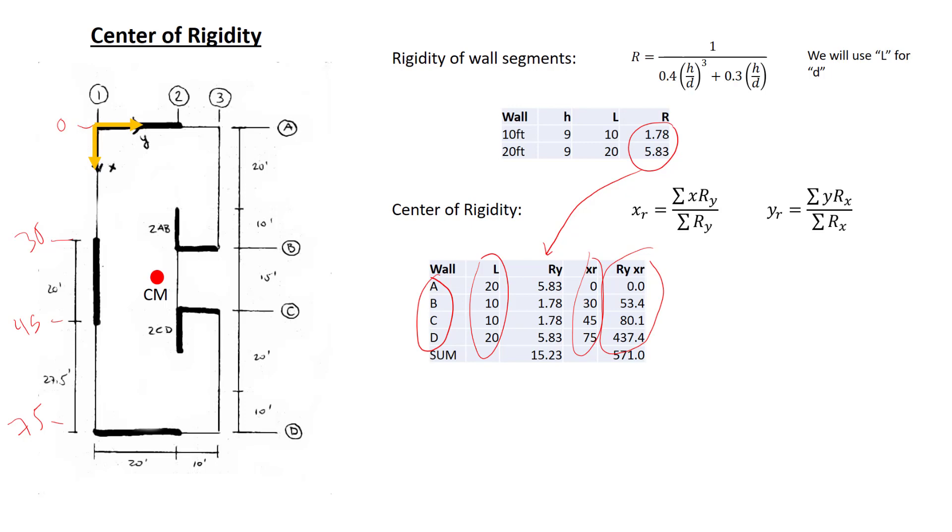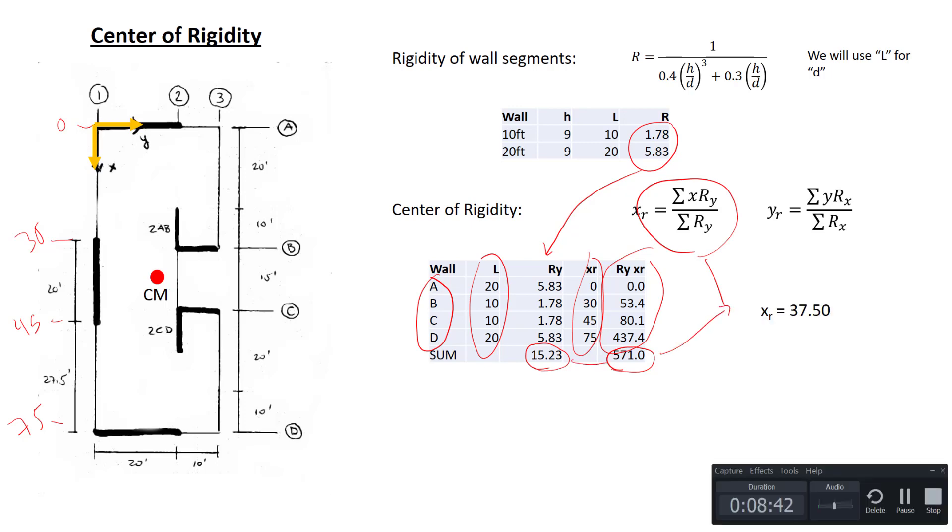Multiply the rigidity times x, add up all the rigidities, add up the rigidity times the location, use this equation right here, and we get the value of the x coordinate of the center of rigidity.